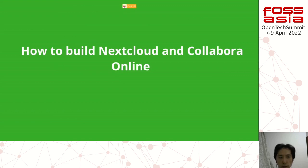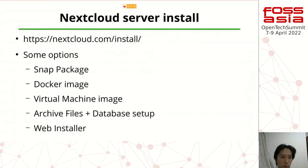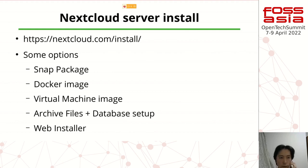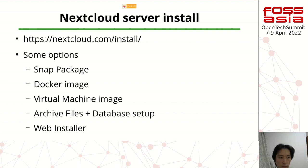Third topic: how to build Nextcloud and Collabora Online. Time is very short, so check the website, but it's very easy to install Nextcloud. Options include snap, Docker, virtual machine, or archive file. I recommend snap or Docker as the easiest. I mainly use the source now. Snap is not flexible — if you want to scale, use another install option.